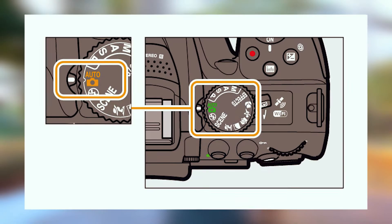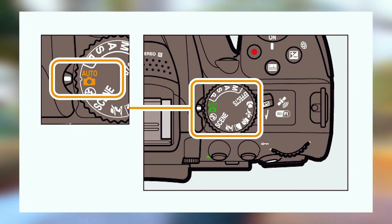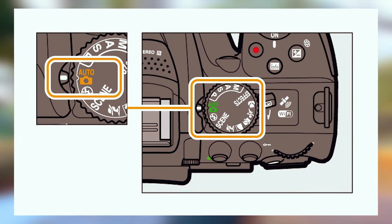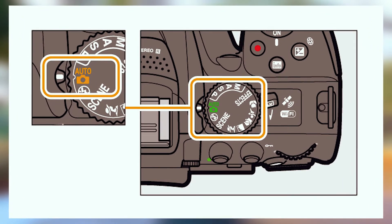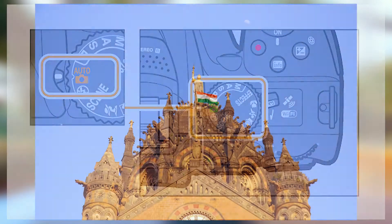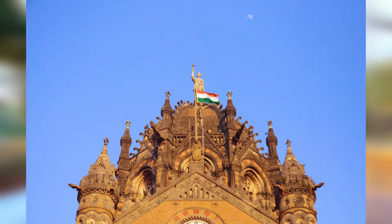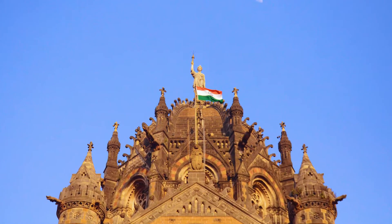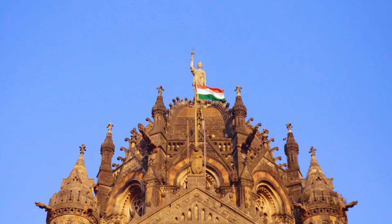Let's start with the auto mode. The first mode is auto mode — it is automatically selected for your camera, which determines the best lighting conditions.